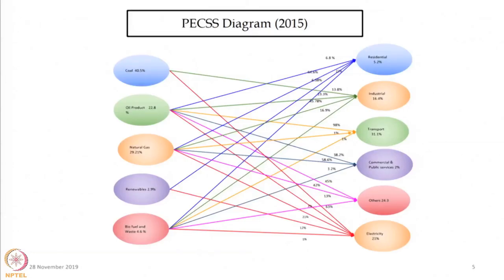This is the primary energy consumption by source and sector diagram. The sources are coal, natural gas, oil, renewables, et cetera. The sectors are residential, industrial, transport, et cetera. The transportation and industry sectors consume more energy in Australia.